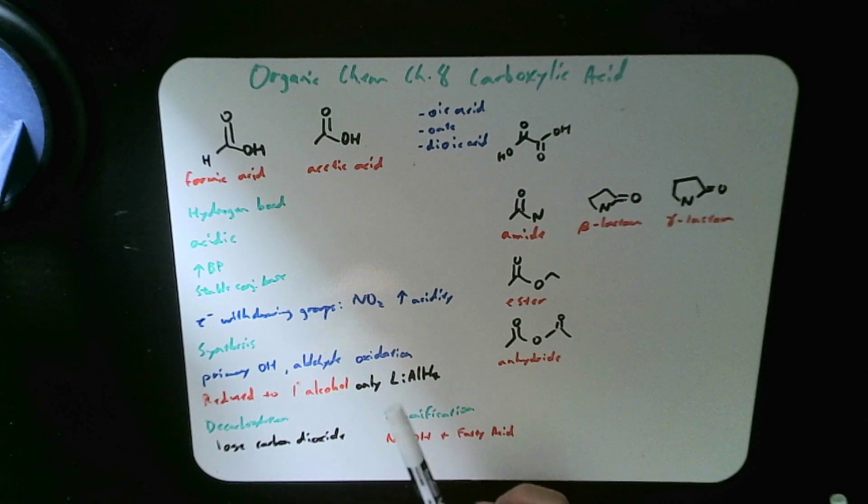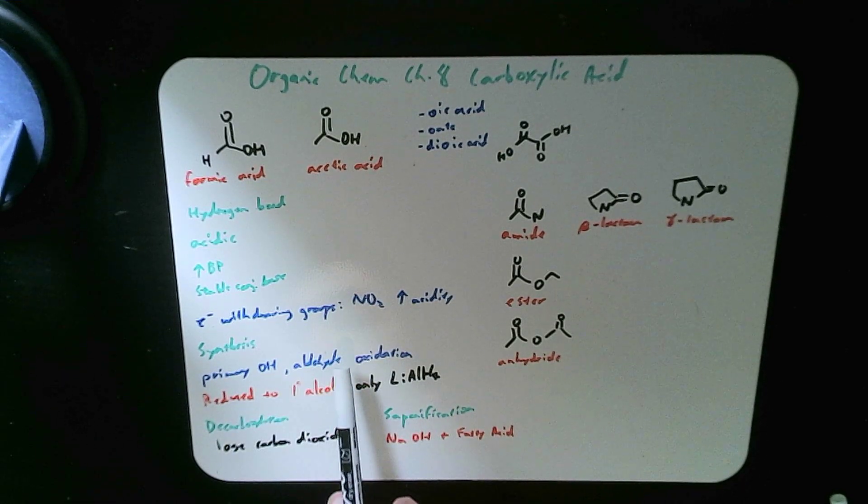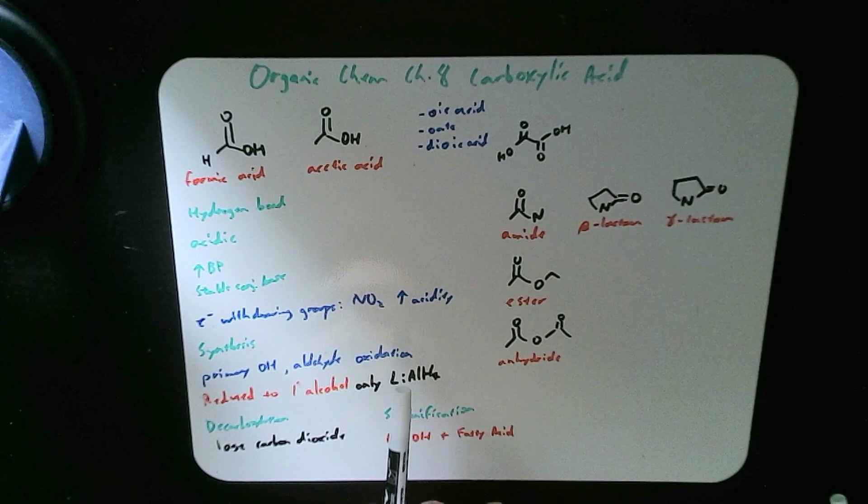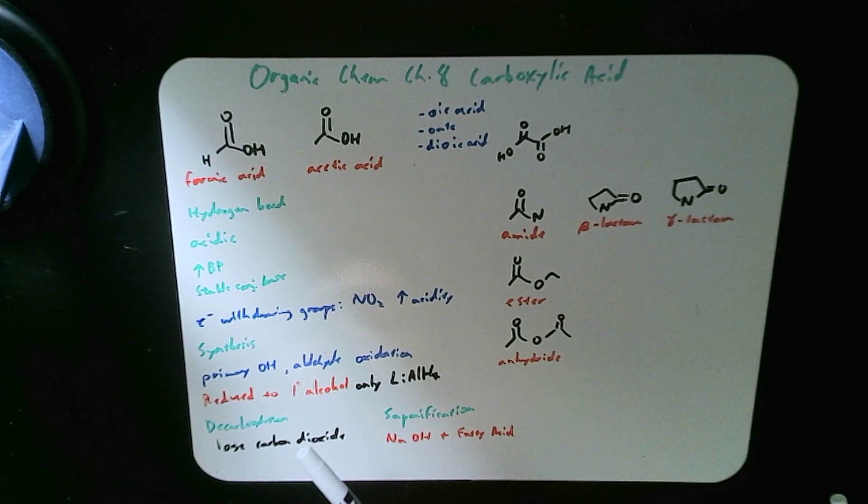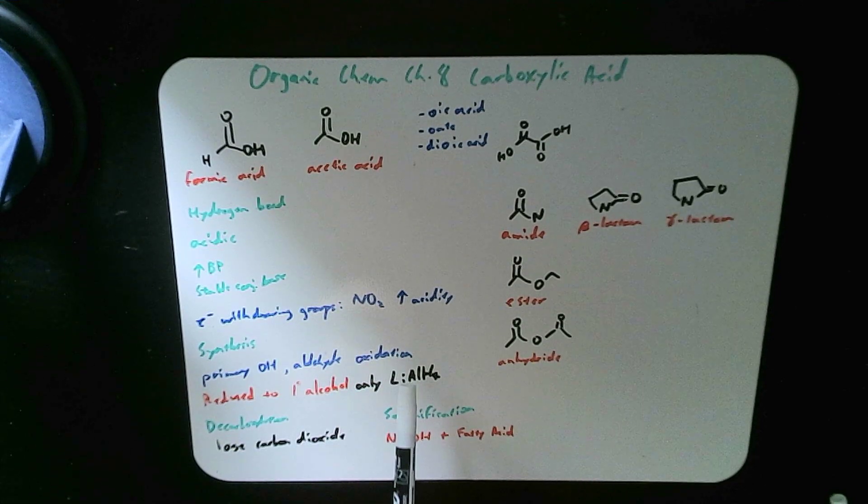Cr is a PnO4, but it can only oxidize to aldehyde. But if you use a stronger oxidizer, such as KMnO4, that can oxidize it all the way to carboxylic acid.